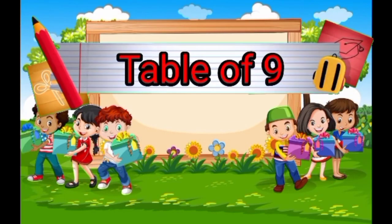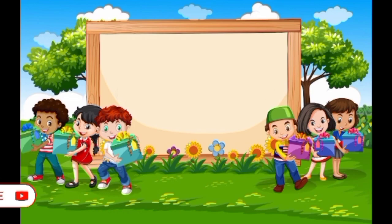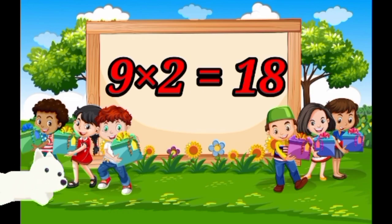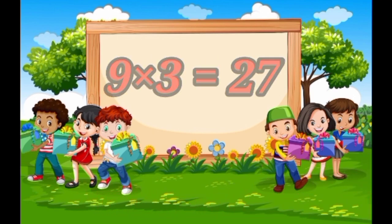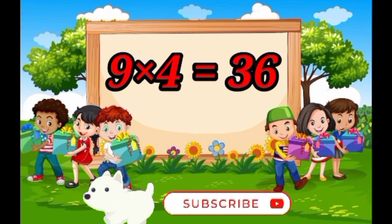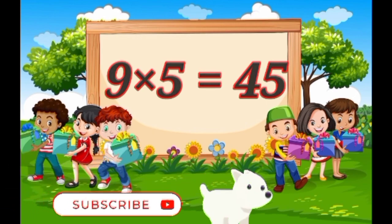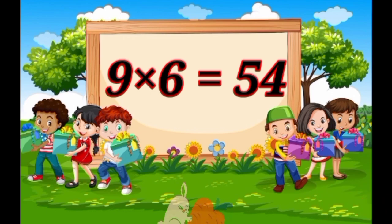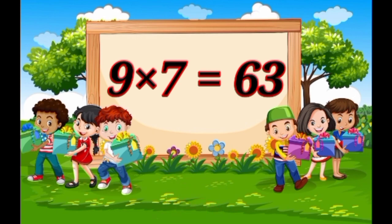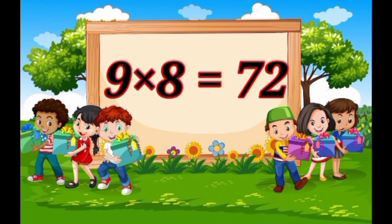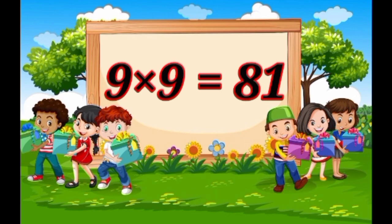Nine twos are eighty, nine threes are twenty-seven, nine fours are thirty-six, nine fives are forty-five, nine sixes are fifty-four, nine sevens are sixty-three, nine eights are seventy-two, nine nines are eighty-one.